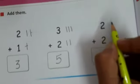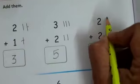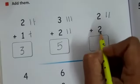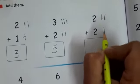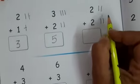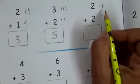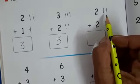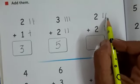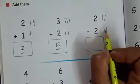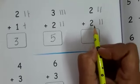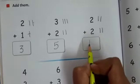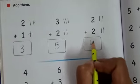This is number 2. Draw 2 lines: 1, 2. This is also number 2. Again draw 2 lines. How many total lines are there? Count it: 1, 2, 3, 4. How many? 4. Two plus two is equal to 4.